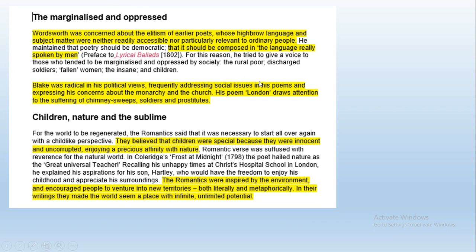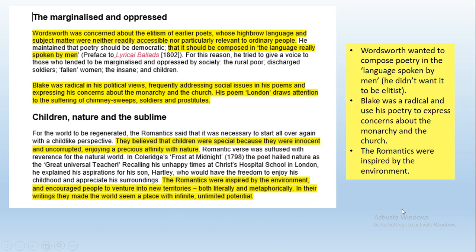The second important point is that Romantic poets believed children are special because they were innocent and uncorrupted, and lots of their poetry involves children - we have the chimney sweep in London. The Romantics were also inspired by the environment and encouraged people to venture into new territories both literally and metaphorically in their writing, making the world seem like a place with infinite unlimited potential. Key points to copy down: Wordsworth wanted to compose poetry in everyday language; Blake was a radical who used poetry to express concerns about the monarchy and the church; and the Romantics were inspired by the environment.